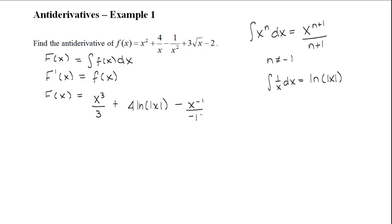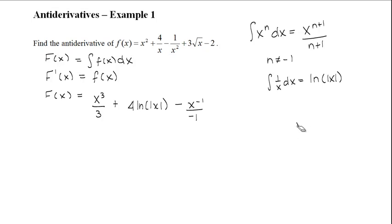For the fourth term, we have 3 times the square root of x. The square root of x is also the same as x to the power of one half. When we add 1 to the one half, we get 3 over 2. So this term will be 3 times x to the power of 3 over 2, divided by 3 over 2.